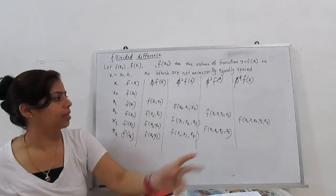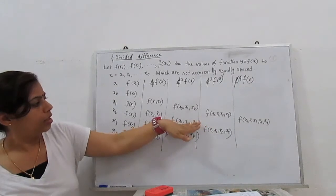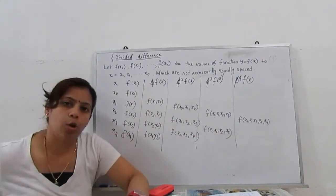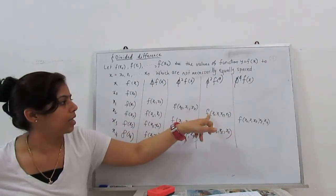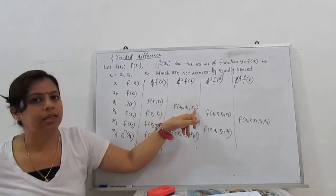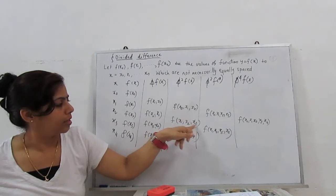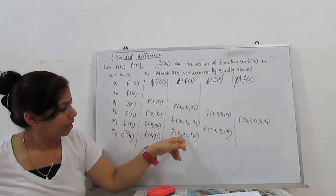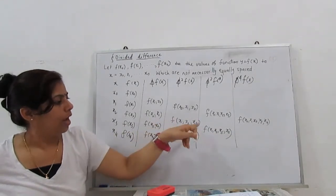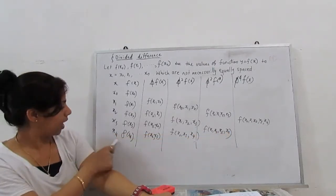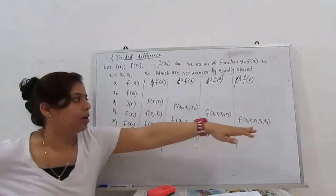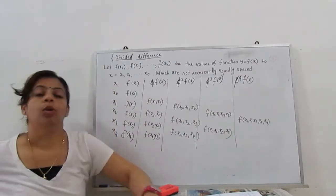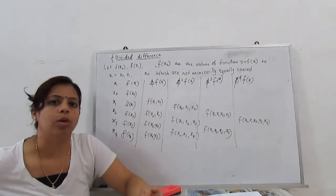For third-order differences, we take this value minus that value; the denominator for the first third-order term is x3 minus x0. The next uses x4 minus x1 as the denominator. For fourth-order, numerator is this minus that, and denominator is x4 minus x0, and so on. This is the process of constructing the divided difference table.